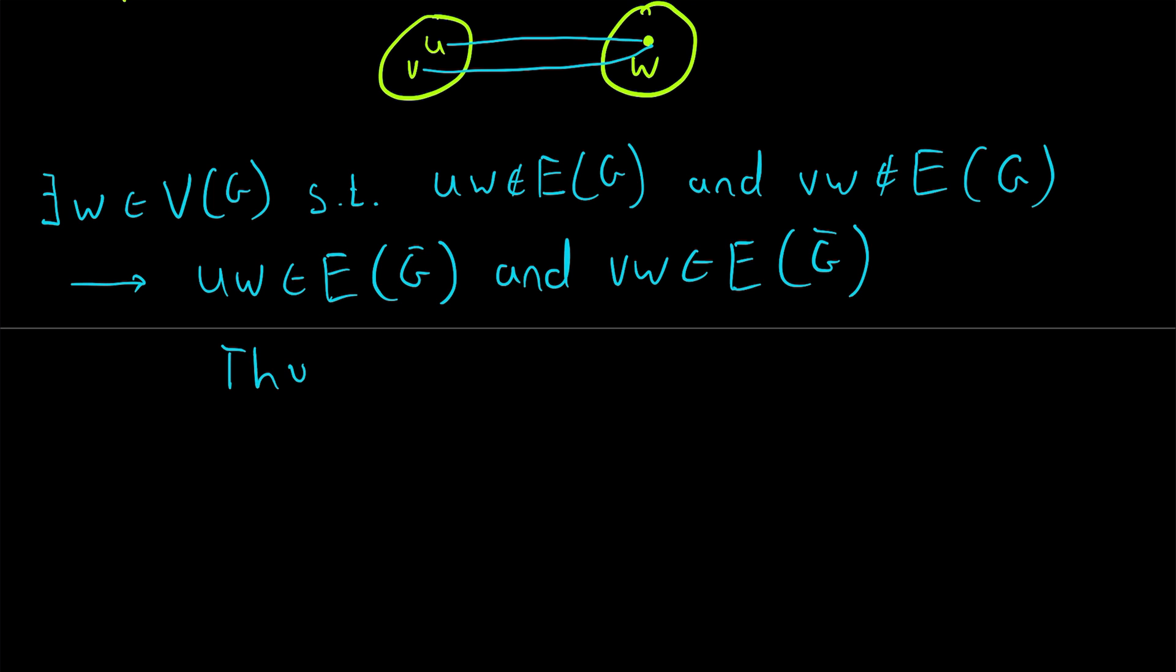So we'll write that thus going from U to W to V is a UV path in G complement. Thus take any two distinct vertices from G that you want they could be in the same component or in different components they're going to be connected in G complement and therefore by definition G complement is connected.